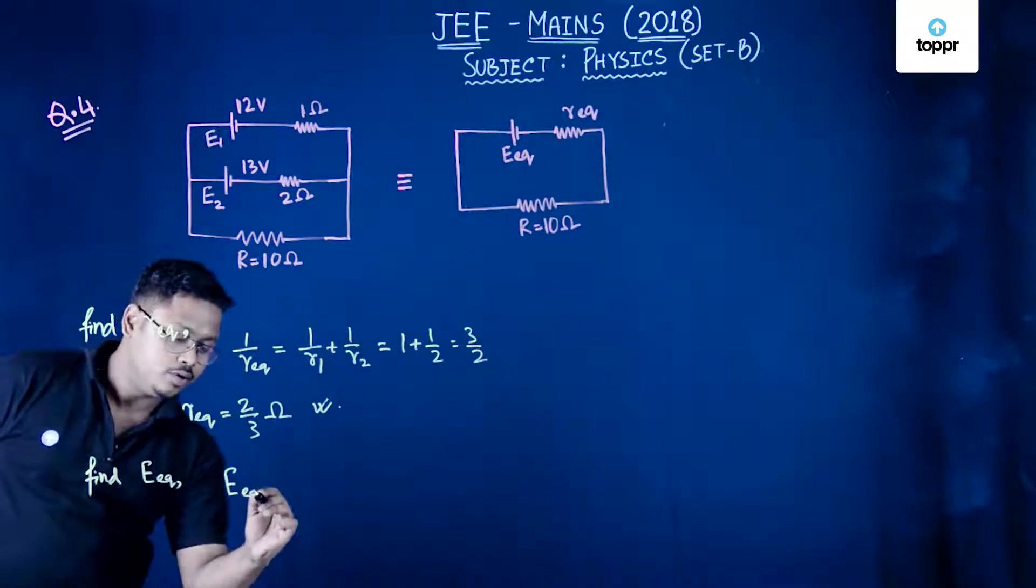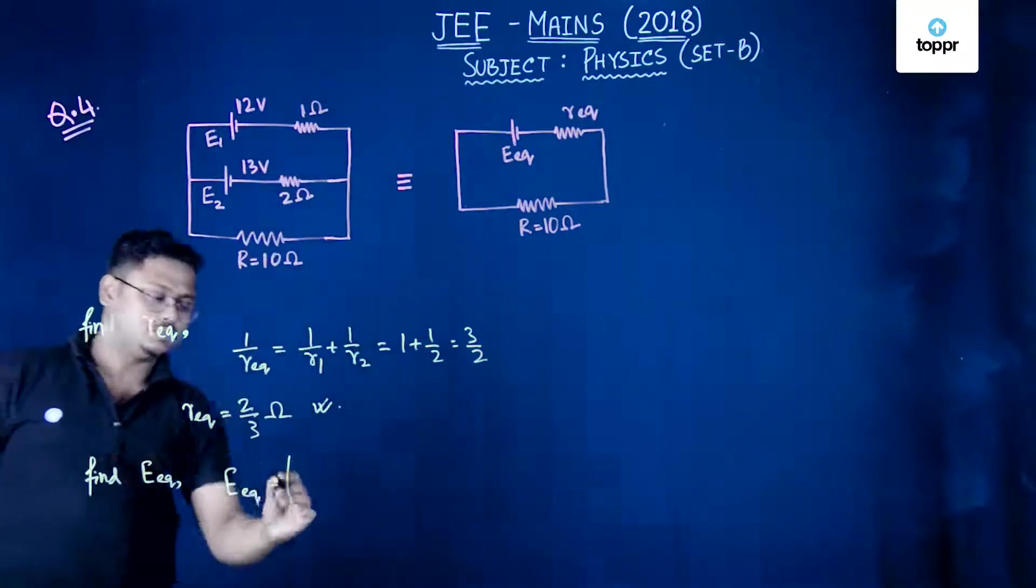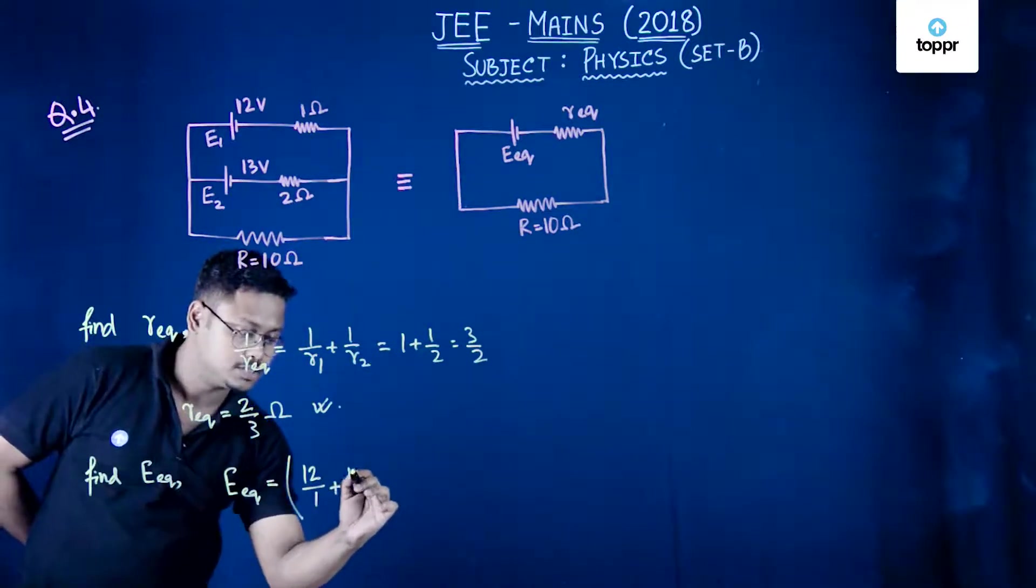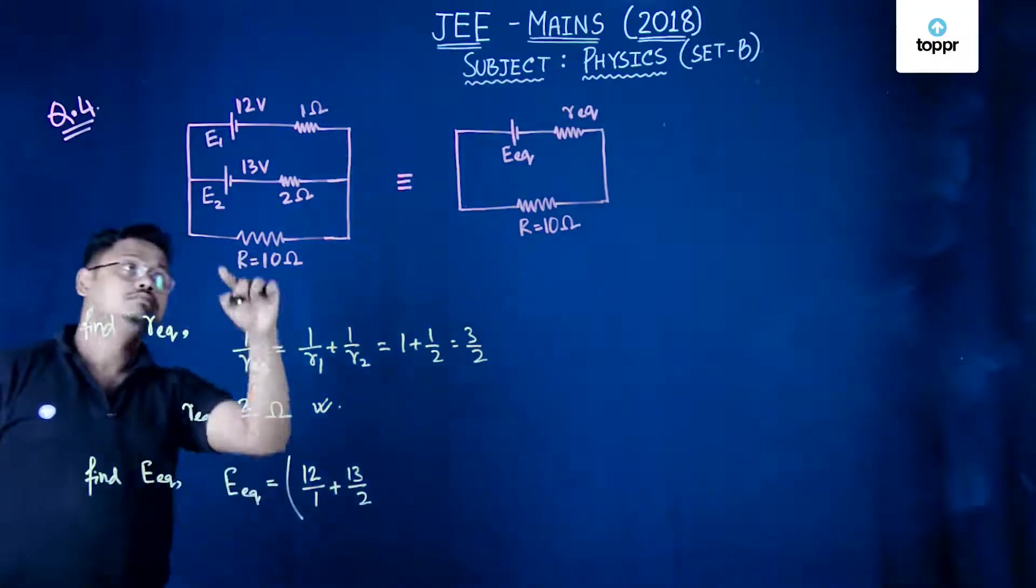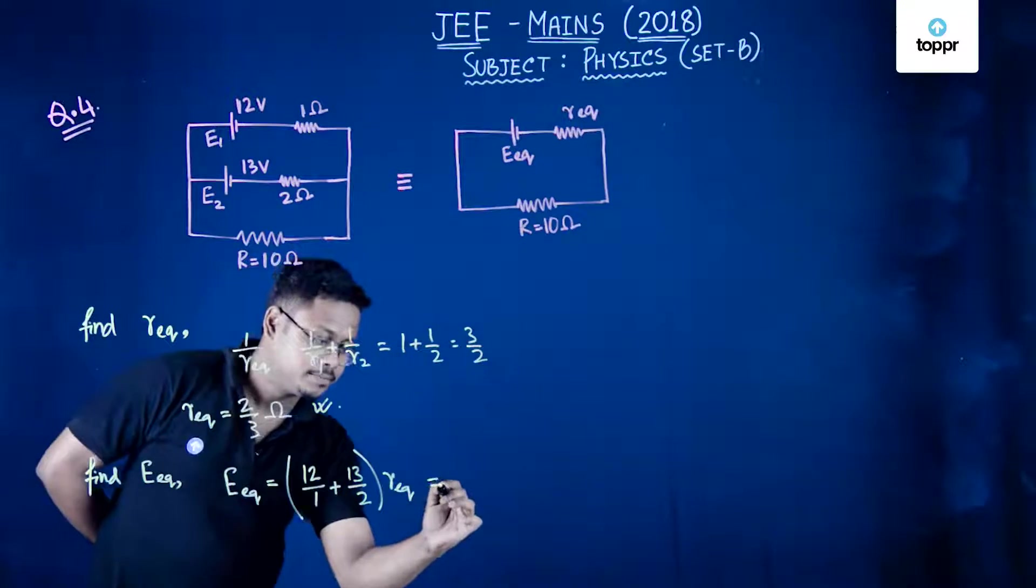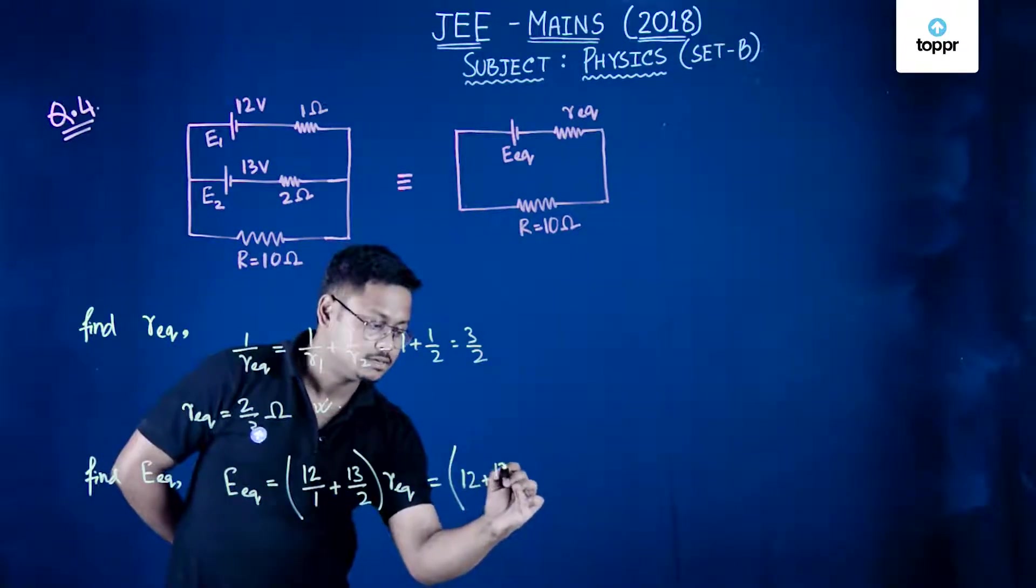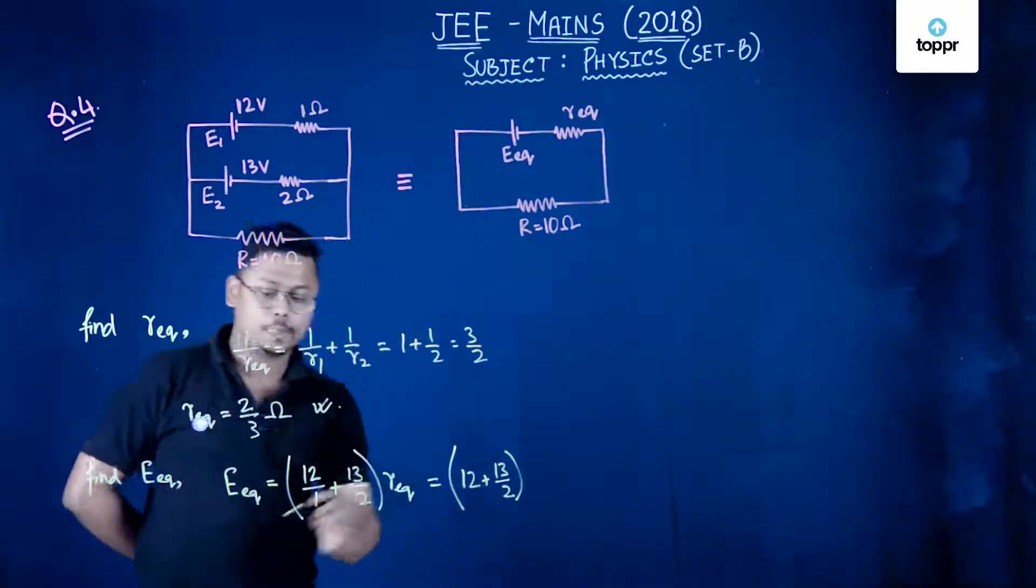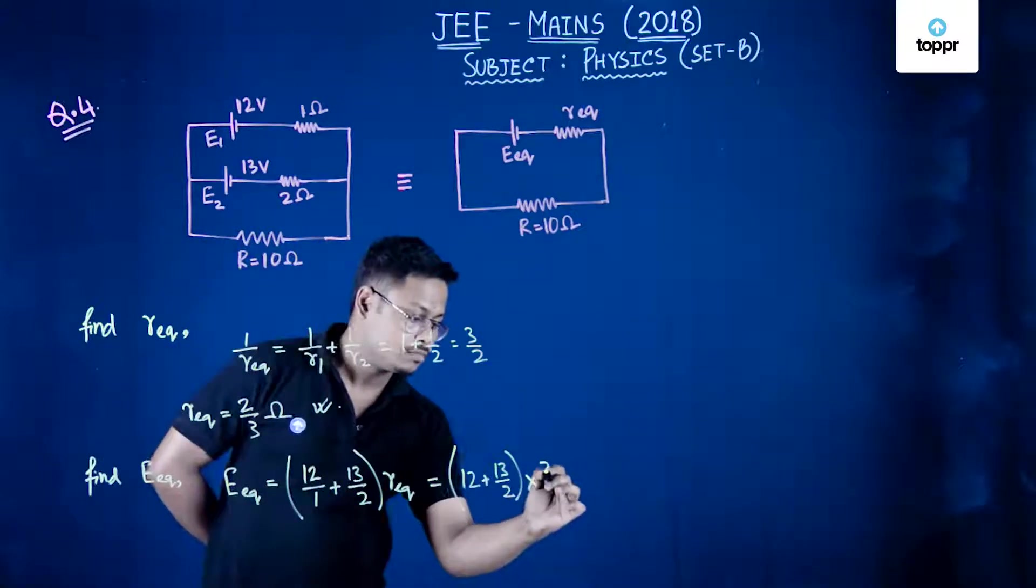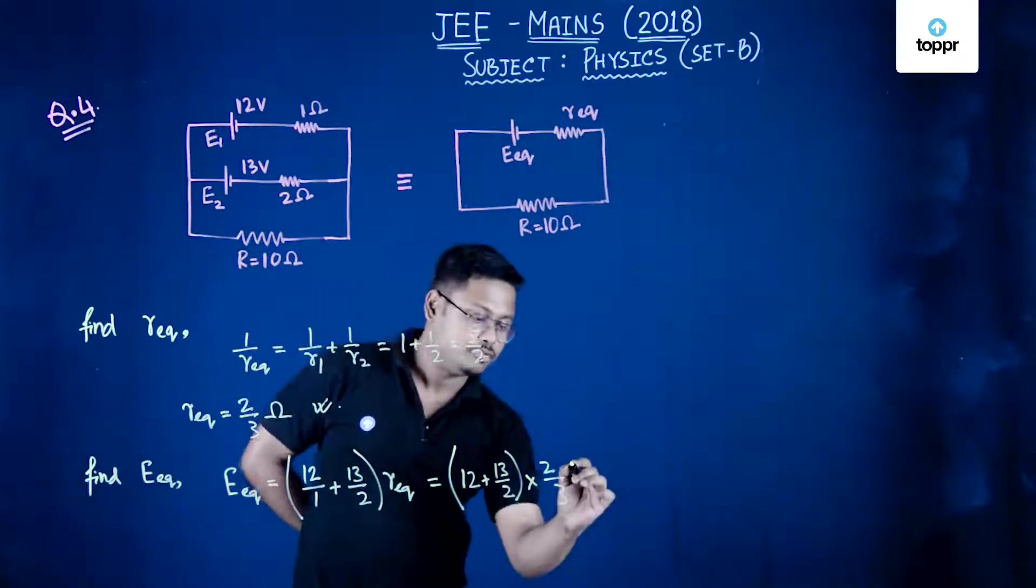E equivalent will be 12 upon 1 plus 13 upon 2 into R equivalent. This will be 12 plus 13 by 2 into 2 by 3, this amount of volt.